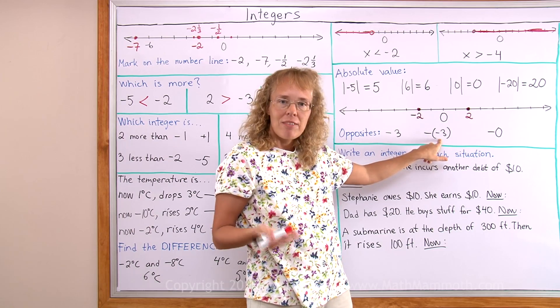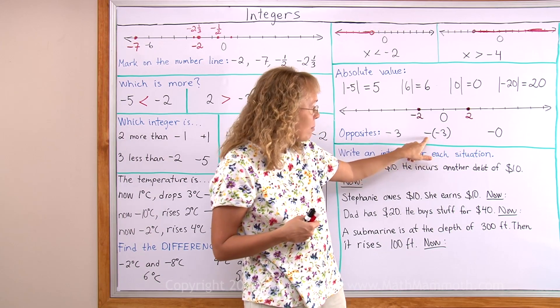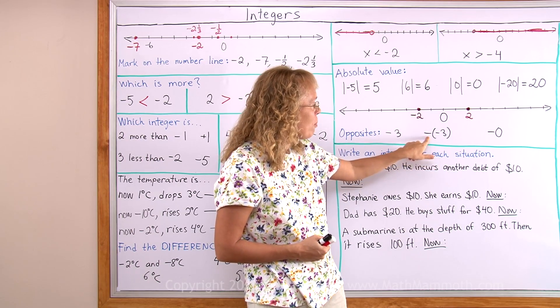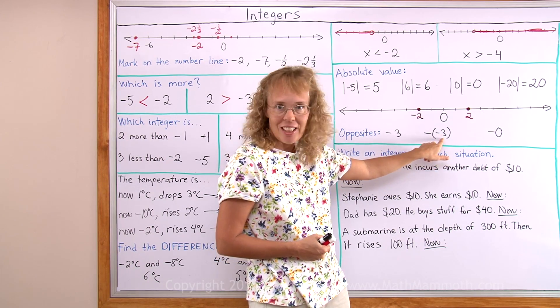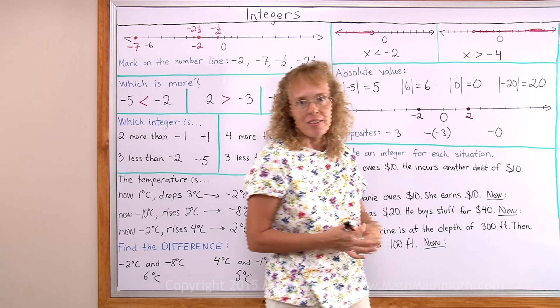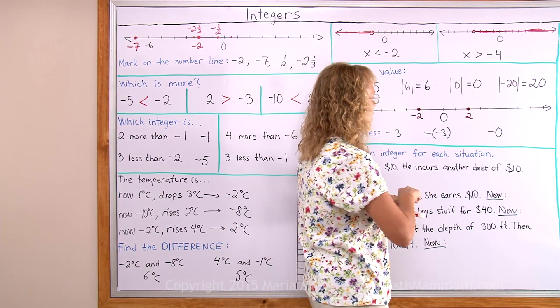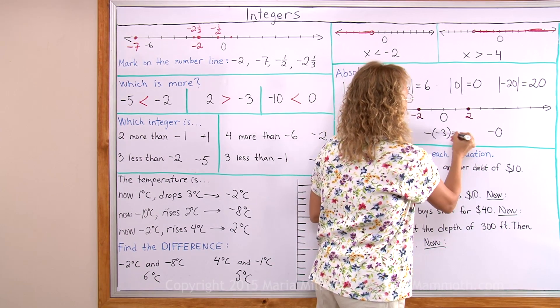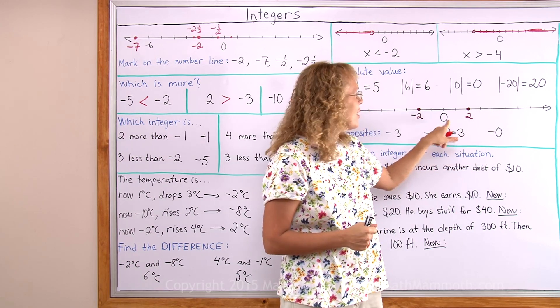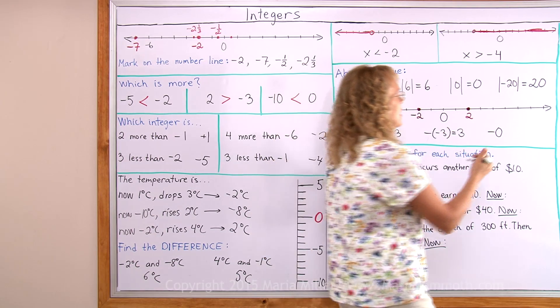Now here it makes maybe more sense. Inside a parenthesis we have negative 3. And then this minus sign here will mean opposite of. So I will read this as opposite of negative 3. Negative 3 here and its opposite over here is 3. So here I can actually write this equals 3. And then this here would be the opposite of 0. The opposite of 0 is of course 0.